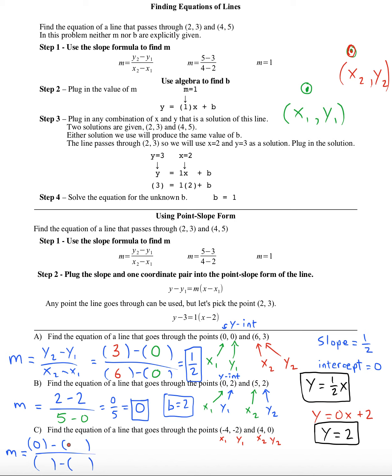So zero minus negative two. It's important to keep that double negative in there. And over here you'll have four minus negative four, so double negative will change to a positive here. So it's two over eight, which is one fourth.